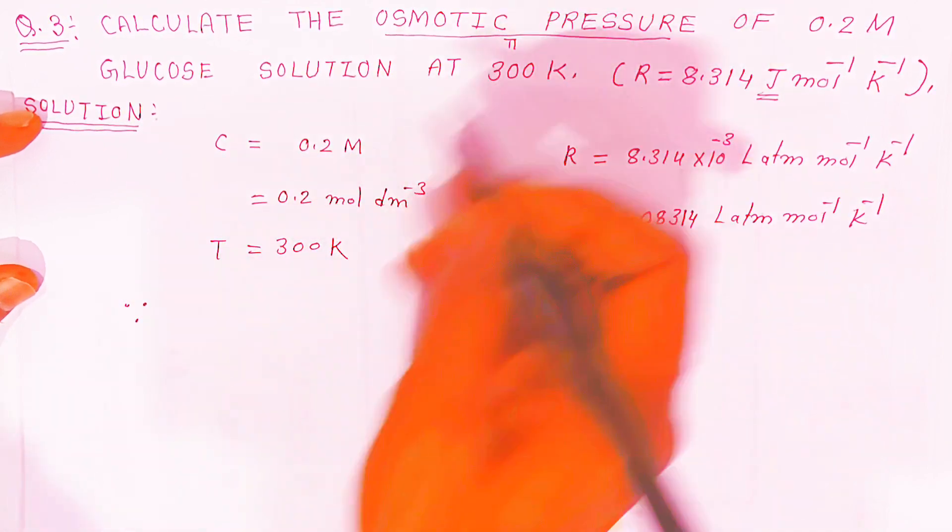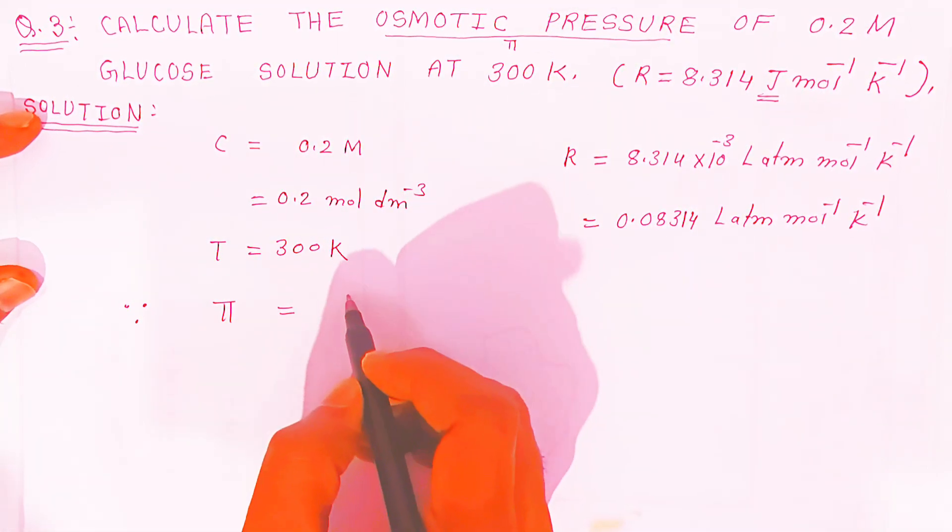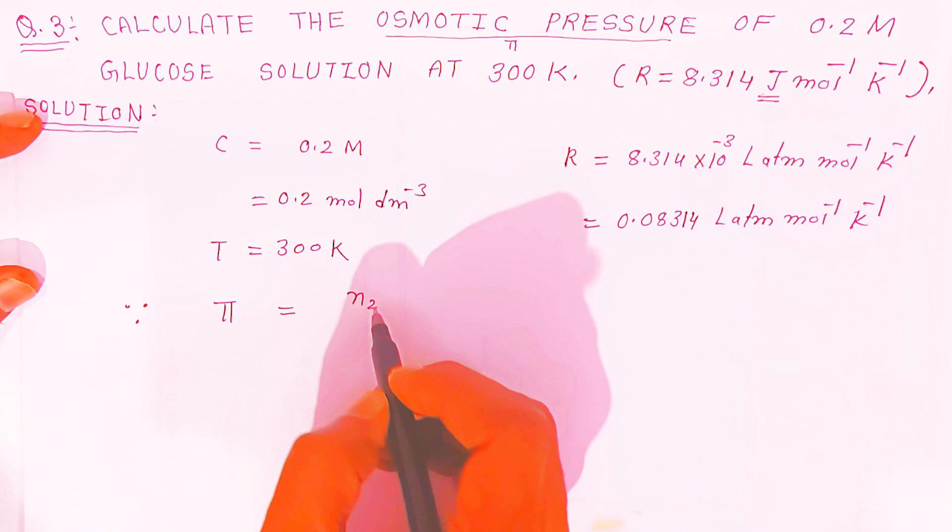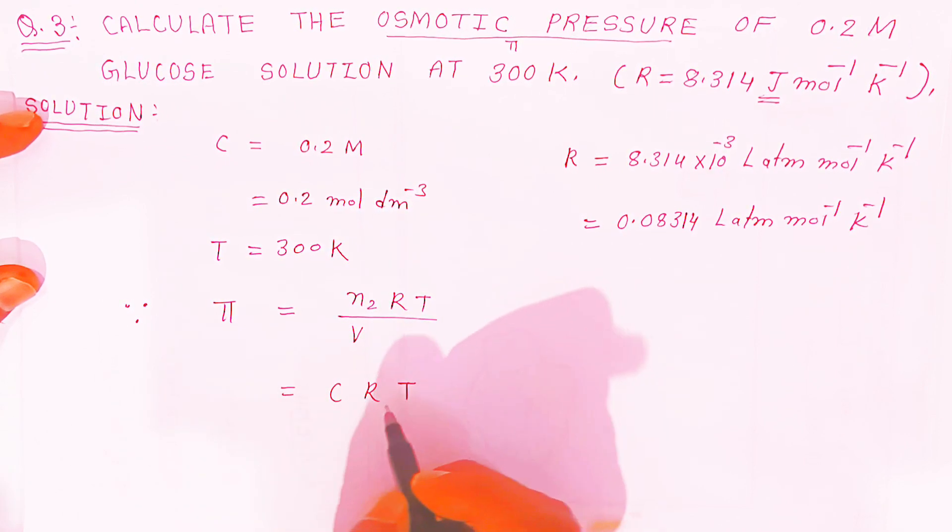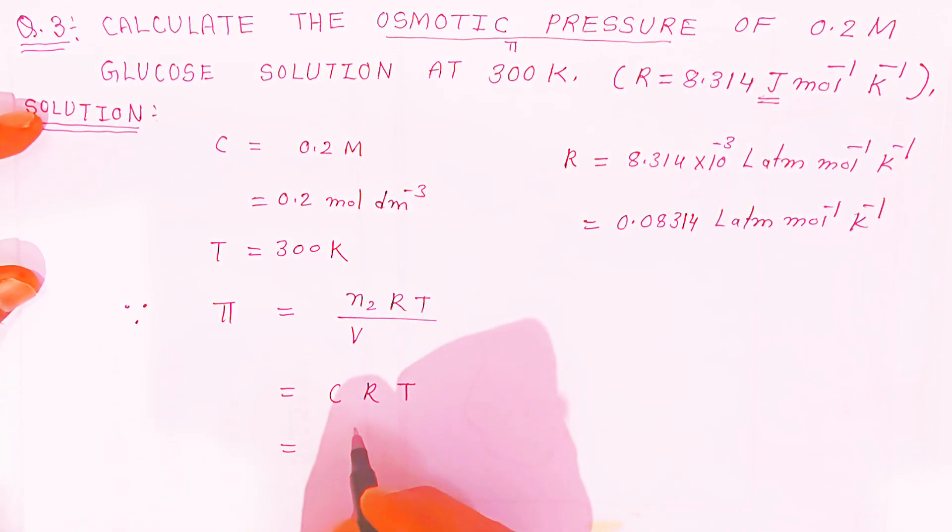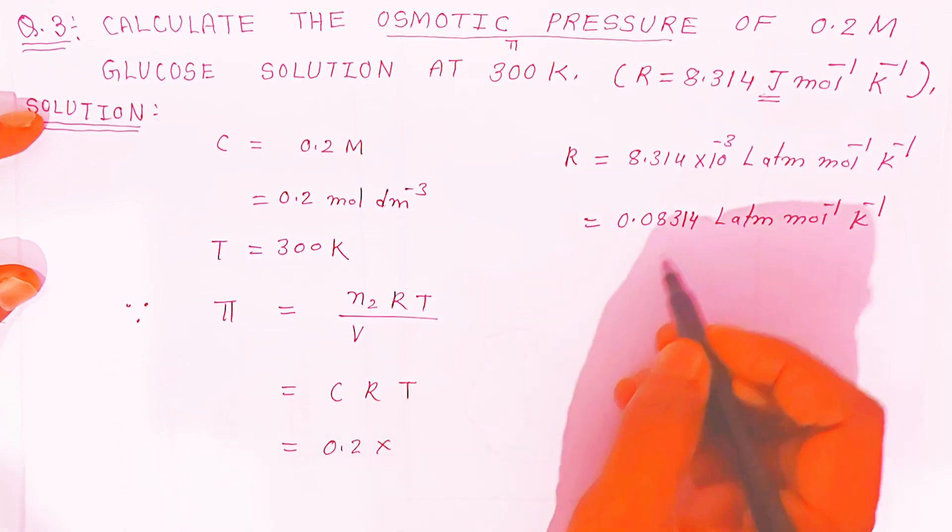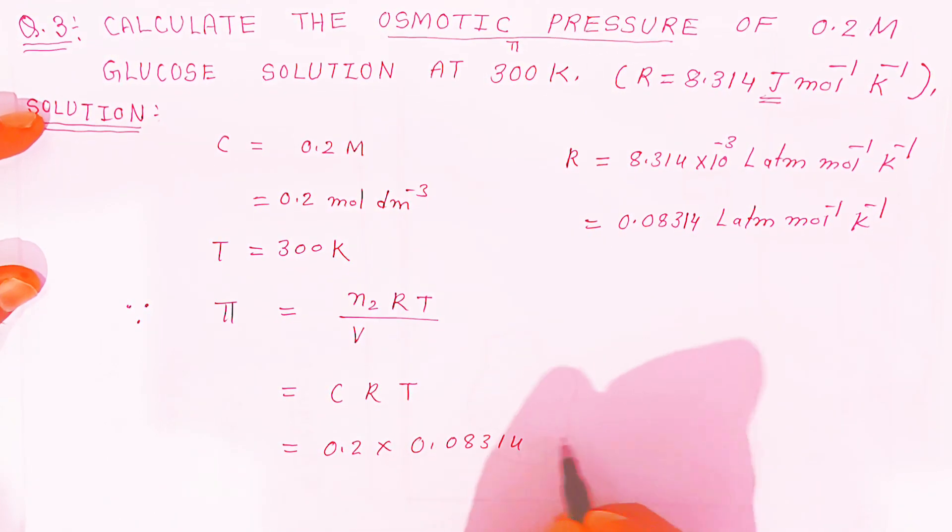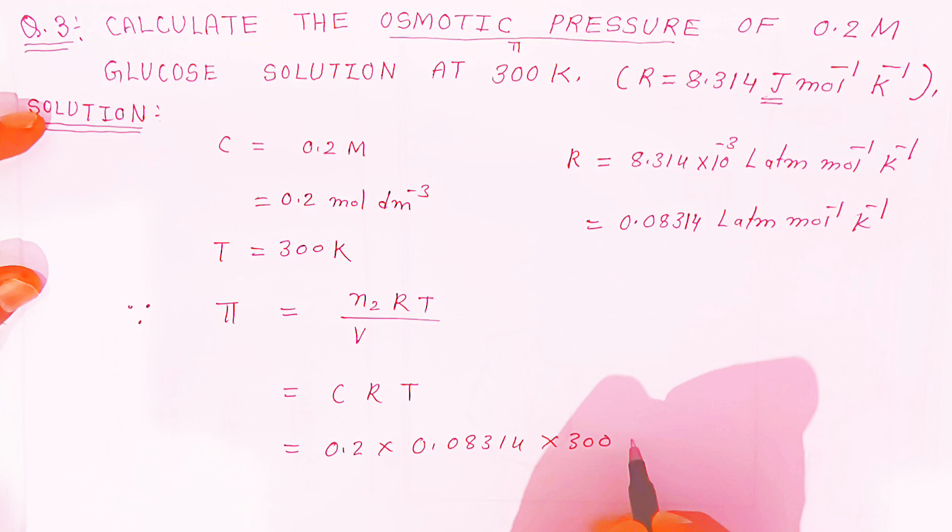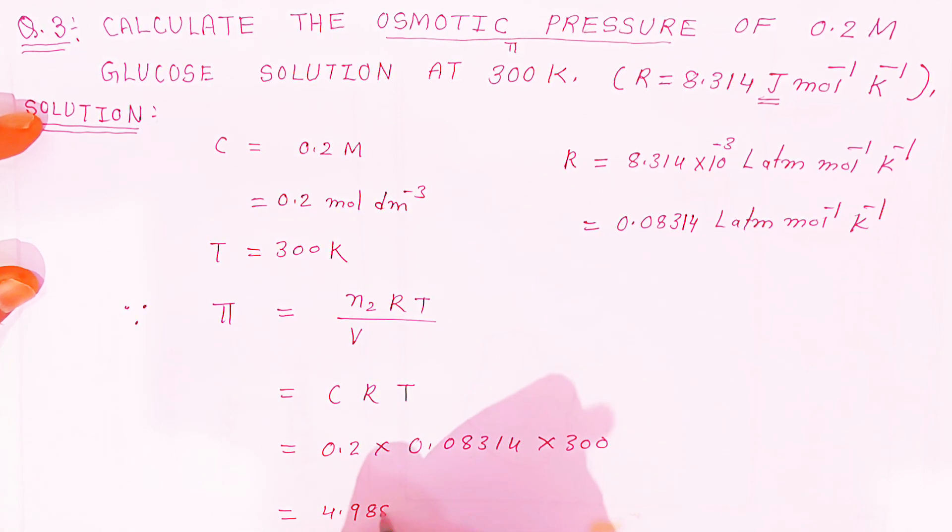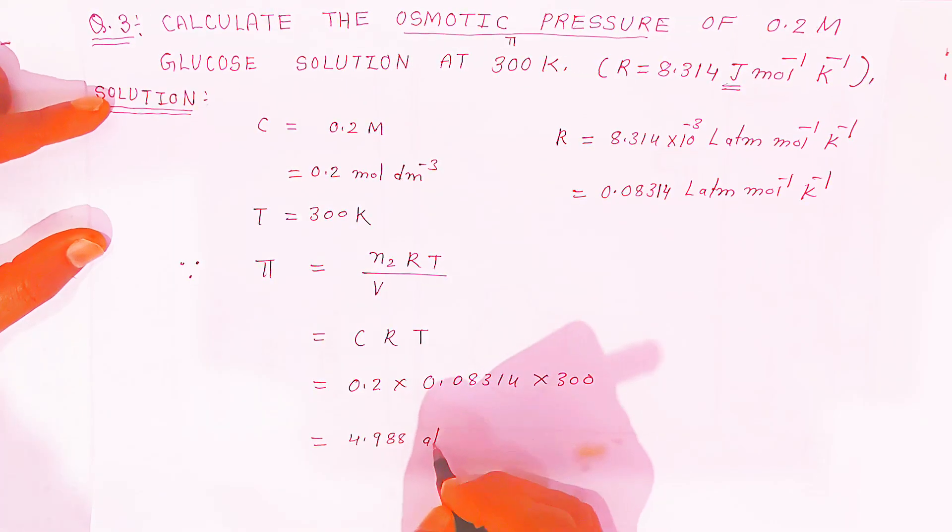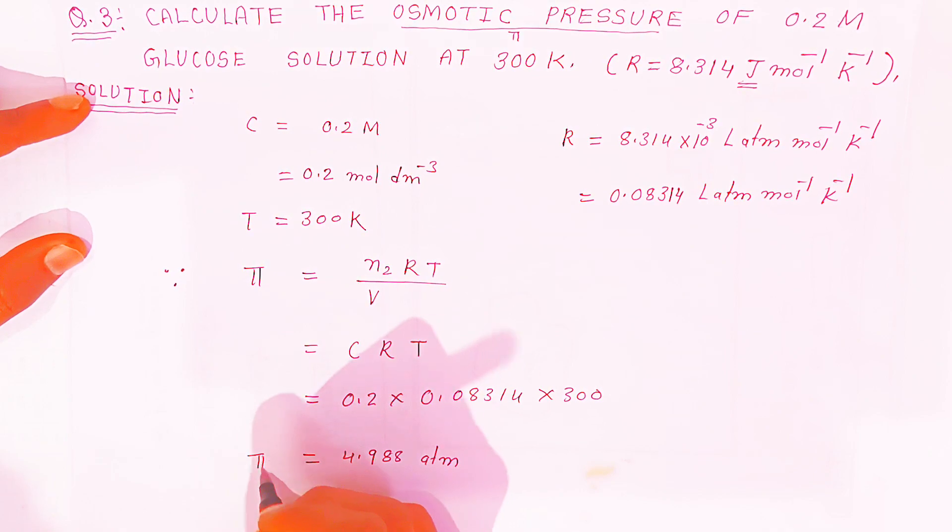The formula of osmotic pressure is n₂, that is number of moles upon volume, so this is concentration into RT. You know the concentration is 0.2, you know value of R is 0.08314, you know the temperature is 300 kelvin. If you multiply all these, the value is going to become 4.988 atmosphere. This is the value of pi.